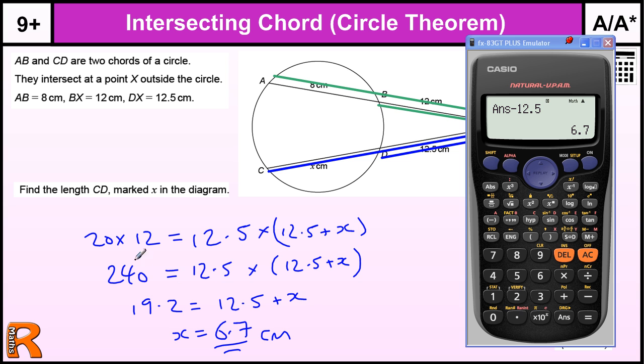So there is a mark for getting the 240, there is a mark for dividing that by the 12.5 to get the 19.2, and a mark for taking the two away and then one for the answer. If you get the answer you will get all the marks.